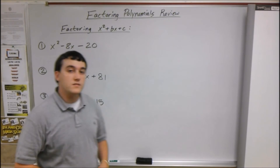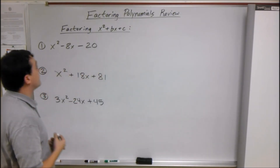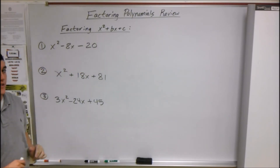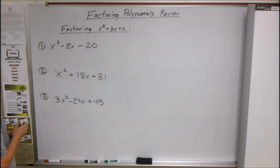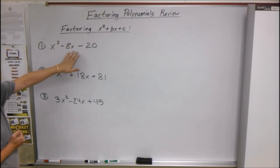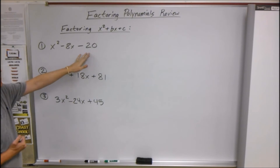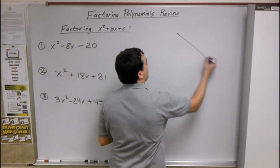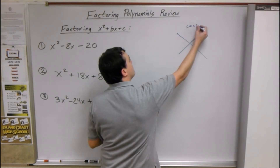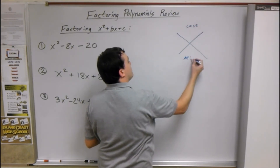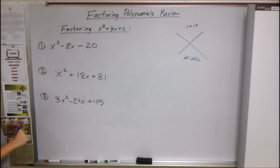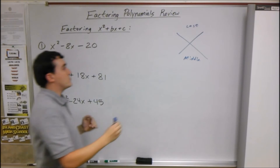Okay, next I'll be talking about factoring polynomials in the form x² + bx + c — so there's no number in front of the x². For the first one we have x² - 8x - 20. When I think about these I use an x method: draw an x, put the last number in the top and the middle number in the bottom. Just the number — you don't have to worry about the x's when it's just x².